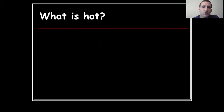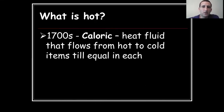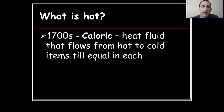So what does it mean for something to be hot? That is the question. There have been many different models of heat over the years. Science is about models and understanding the world around us. In the 1700s, there was a model in which heat was represented as an invisible fluid called caloric. The idea was that when something hot and cold came into contact, the heat fluid — the caloric — would flow from the hot thing into the cold thing, making the hot thing cooler and the cold thing warmer.